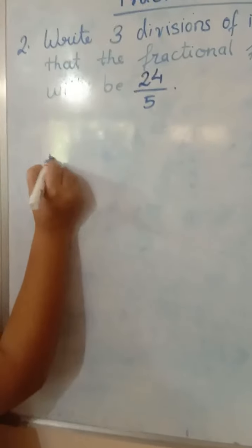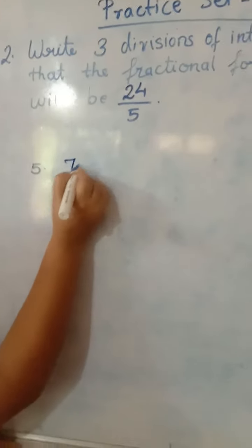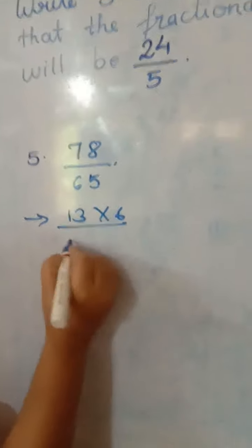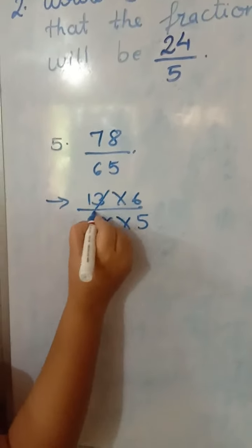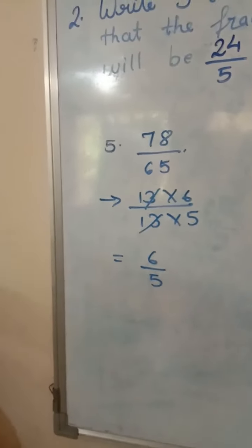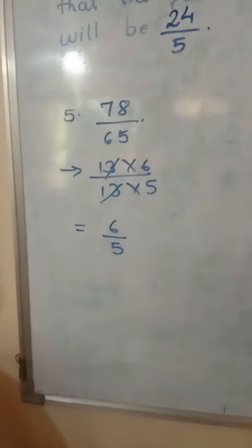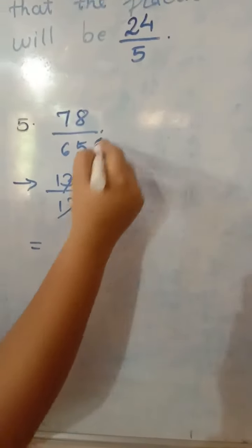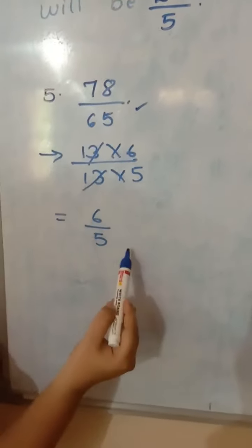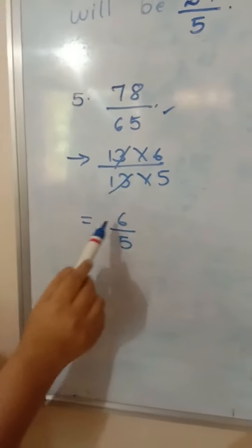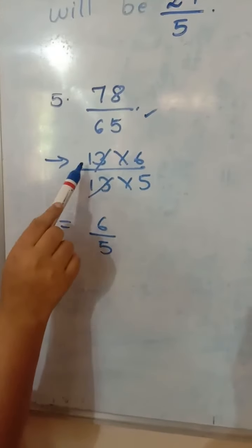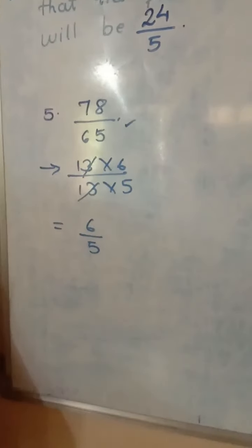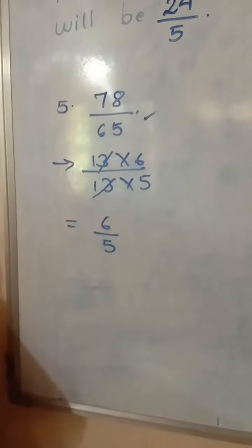For example, take the fifth sum we solved in Question 1: 78 upon 65. What did we do? 13 sixes are 78 and 13 fives are 65. 13 was the common factor and our answer was 6 upon 5, meaning 6 upon 5 is the simplest form of 78 upon 65. Now in place of 6 upon 5 we have 24 upon 5, so we need to find three equivalent fractions in the same way. Going from the simplified form back up: we multiplied 6 upon 5 by 13 on both sides to get 78 upon 65.